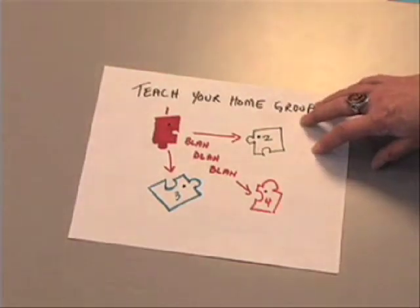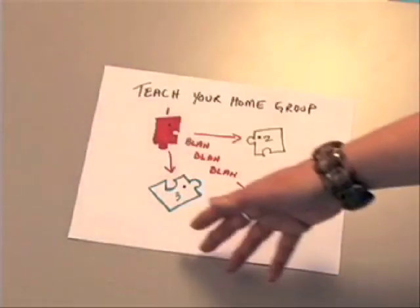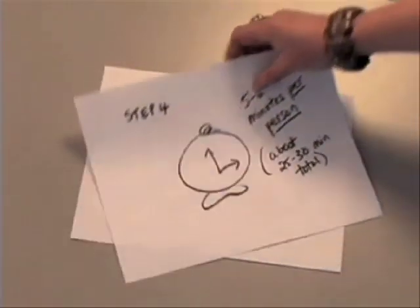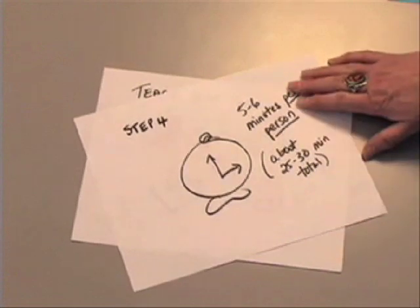Back in their home groups, members take turns teaching the rest of their group members what they learned in their corners, and distributing their handouts. Again, depending upon the complexity of the content, this step might take about 25 or 30 minutes, or 5 to 6 minutes per person.